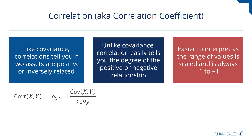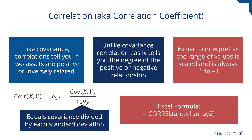Here's your typical correlation formula. As you can see, it's derived from the covariance of two assets, but then divided by each asset's standard deviation of returns. Luckily, Excel also has a formula to easily calculate correlation. Here we're using the array functionality within Excel, where the first array would be the returns of asset one and the second array would be the returns of asset two for a quick and easy calculation.